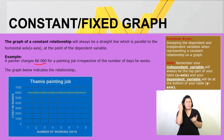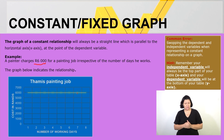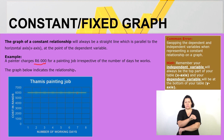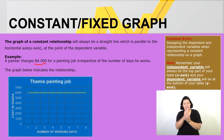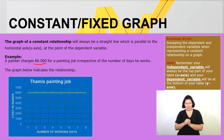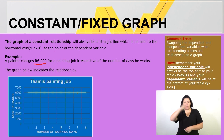A common mistake that normally happens when working with these types of questions is that you tend to swap the dependent and independent variables when representing a constant relationship on a graph. Here is some advice: remember your independent variable will always be at the top part of your table, which is the x-axis, and your dependent variable will be at the bottom of your table, which then becomes your y-axis.